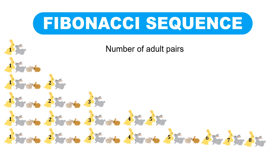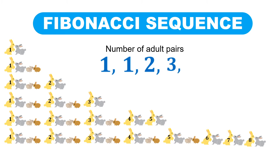Now, let's consider the number of adult pairs per month. On the first month, we have one adult pair. On the second month, we still have one pair. On the third month, we have two adult pairs. On the fourth month, we have three adult pairs. On the fifth month, we have five adult pairs. And on the sixth month, we have eight adult pairs.